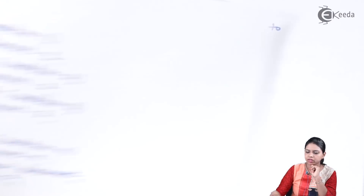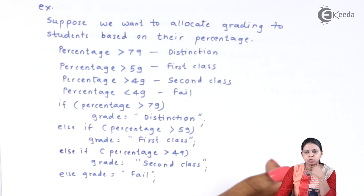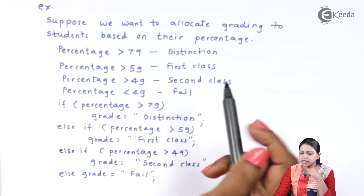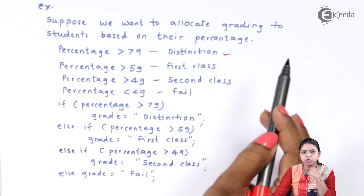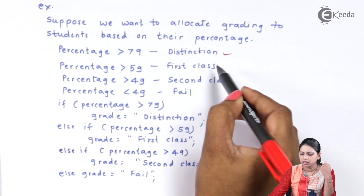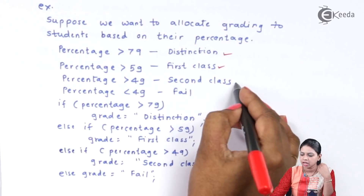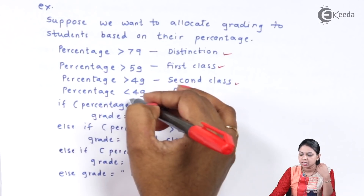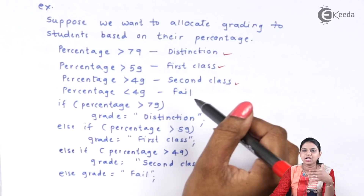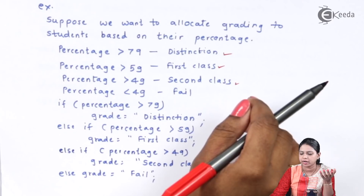Suppose we want to allocate grades to a student based on their percentage. If the percentage is greater than 79, the grade is distinction. If greater than 59, the grade is first class. If greater than 49, the grade is second class. And if it is less than 49, then the student has failed. So we need to check multiple conditions at the same time using the else-if ladder.